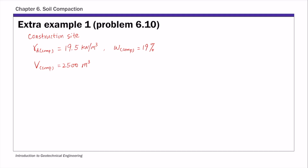From the given values, we can estimate the weight of solids in the compacted soil. Ws = γd compacted × V compacted. This comes directly from the definition of γd: dry unit weight equals weight of solids over total volume. Substituting: 19.5 × 2500 m³ gives the weight of solids for compacted soil = 48,750 kN. And this weight of solids stays constant — it stays the same.